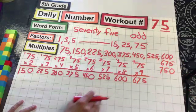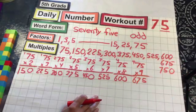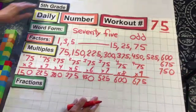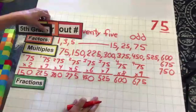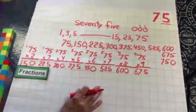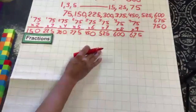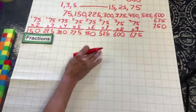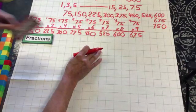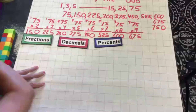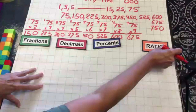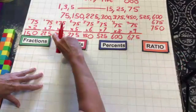Ten times any number is that number with a zero, and we're done with the first ten multiples of 75. Let's move on to fractions, decimals, percents, and ratios.